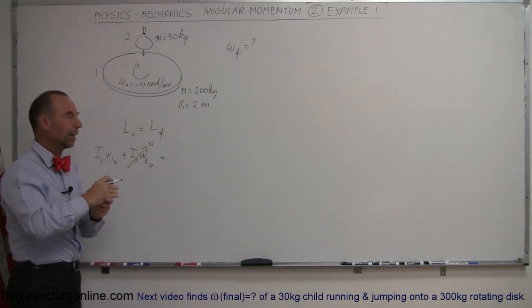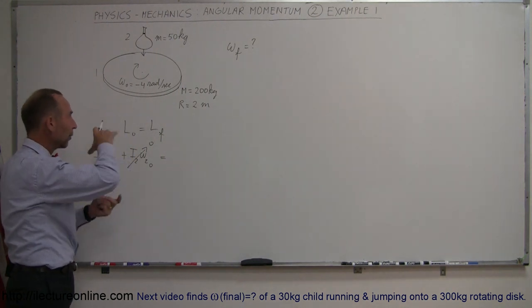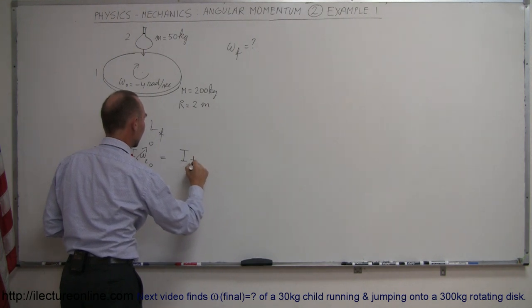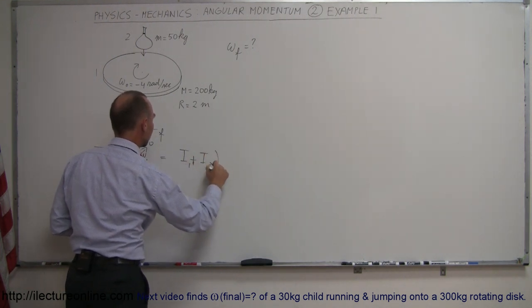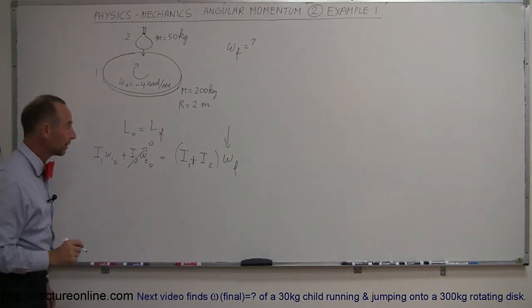And that equals, since they're now together, hopefully the bag will stay on the edge, and then the bag will be rotating with the disc. So we can now add up the two angular momentums, I₁ plus I₂ times the omega final. And of course, that's what we're looking for.